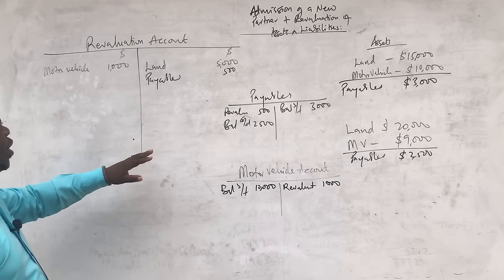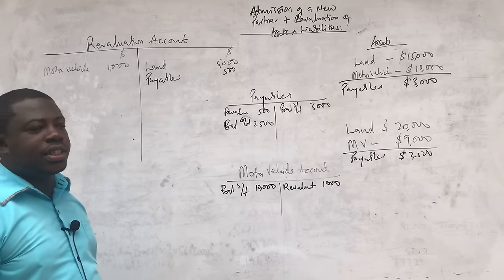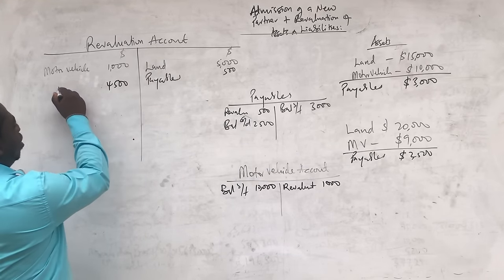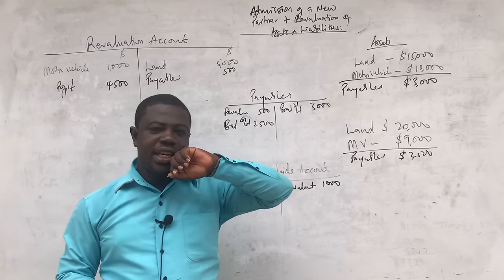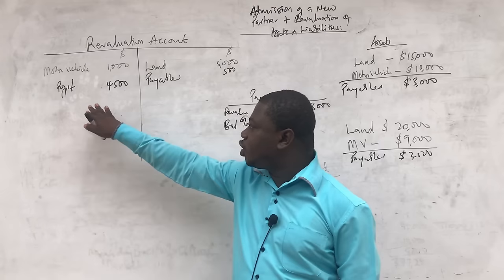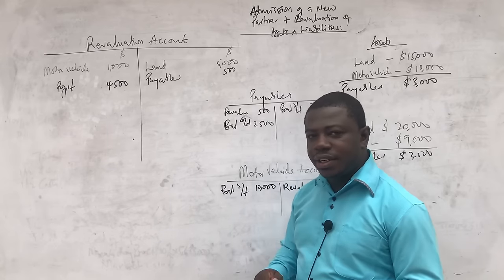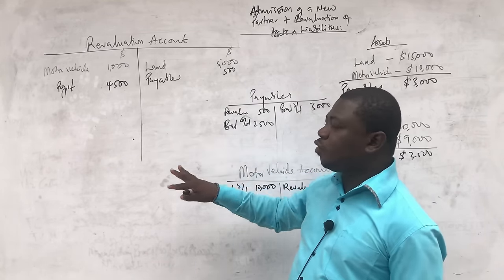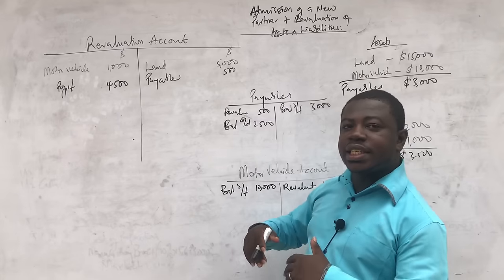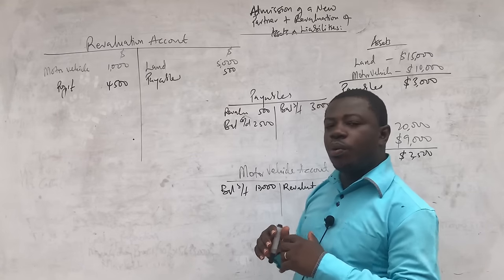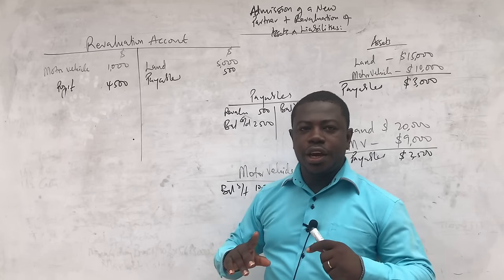If the debit side totals $5,500 and the credit totals $1,000 — wait, let's say credit is more — giving a difference of $4,500, that is a profit on revaluation. This $4,500 will be shared among the old partners; the new partner coming in will not get part of this profit. When it is shared, it goes to their capital accounts or current accounts. The revaluation profit or loss is always shared among the old partners in their old ratios.